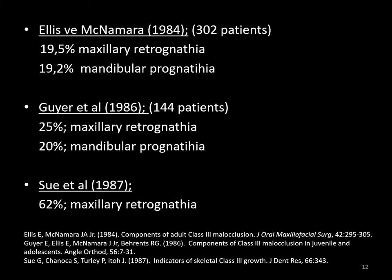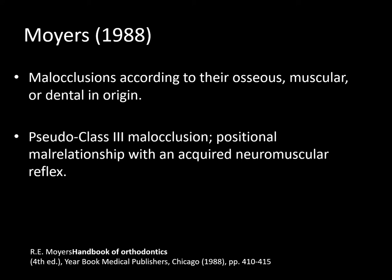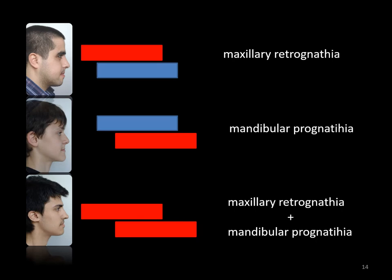Moyers classified malocclusions according to their osseous, muscular, or dental origin. Moyers also emphasized that a pseudo Class 3 occlusion is a positional malrelationship with an acquired neuromuscular reflex. Today, we all know that in most cases, Class 3 occlusion has a maxillary component too.